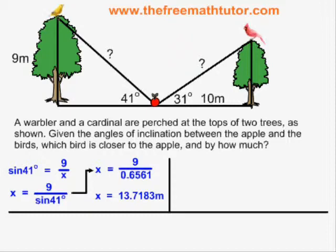Next I move over to the right triangle on the right, where I know a 31-degree angle, a 10-meter adjacent side, and I am looking for the hypotenuse. This is a CAH situation, and will be solved with the CAH formula like this.